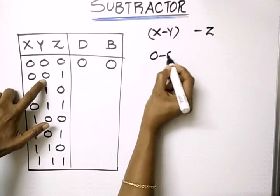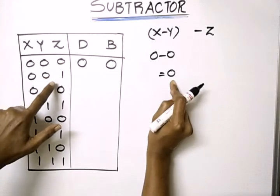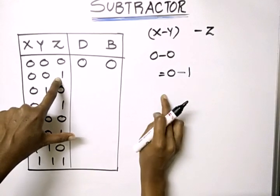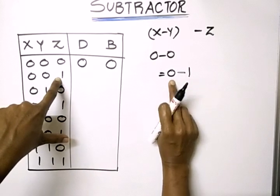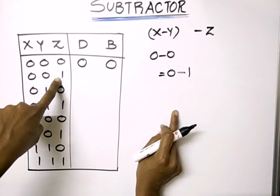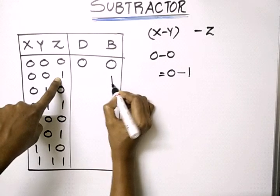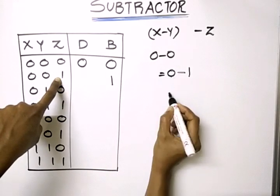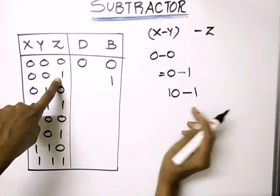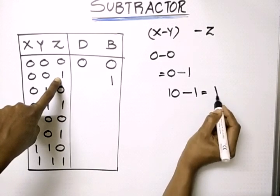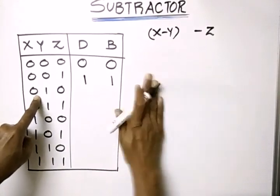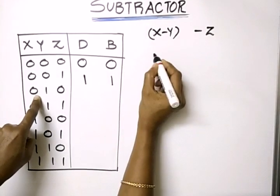For the next combination, X=0, Y=0: 0 minus 0 gives result 0, then we subtract Z=1. We cannot subtract 1 from 0, so we take a borrow from the higher position. After taking the borrow, 0 becomes 10, and 10 minus 1 equals 1. So the difference is 1 and borrow is 1.